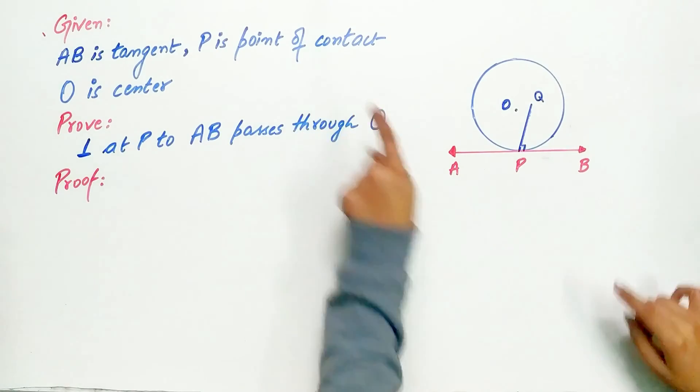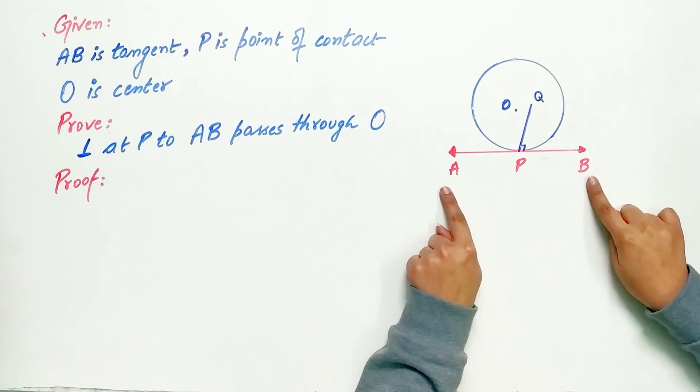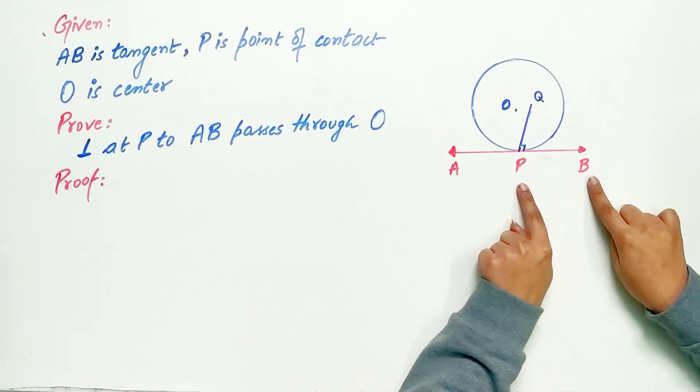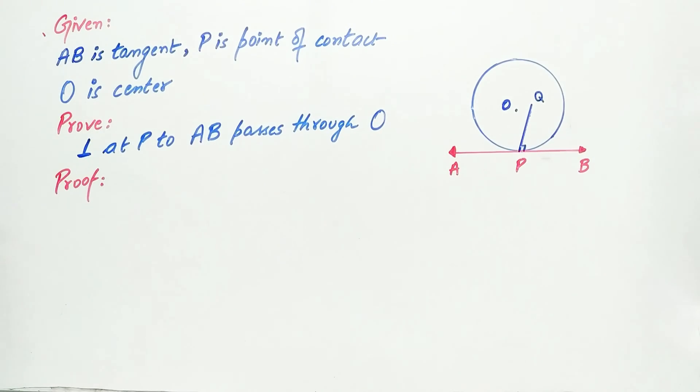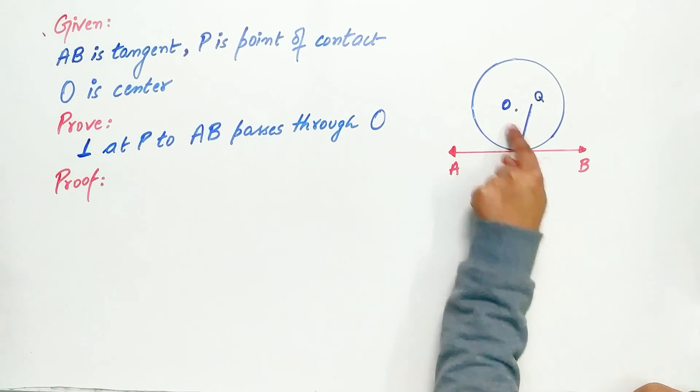It is given to us that AB is a tangent, P is the point of contact and O is the center of the circle. We have to prove that any perpendicular on the tangent will pass through the center of circle.